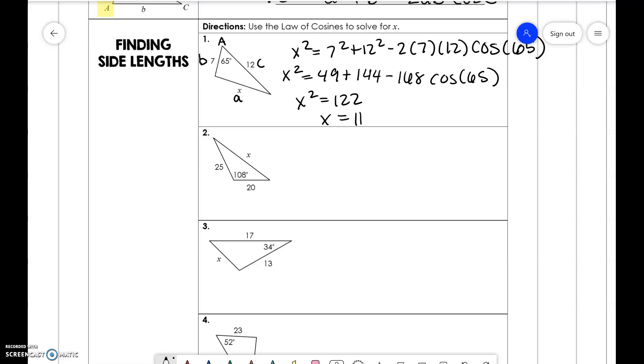It doesn't matter the variable, like the letters that you use, just as long as you stay consistent. So you could say that this is a, b, and c. Again, this has to be angle a. So x squared is equal to 20 squared plus 25 squared minus 2 times 20 times 25 cosine of 108. And I'm just going to break this up a little bit differently.